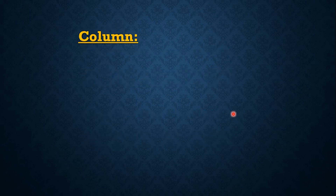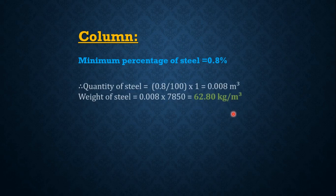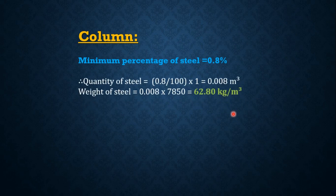Now let's see how much quantity of steel is required in a column. The minimum percentage of steel required in a column is 0.8%. So, the quantity of steel equals 0.8 divided by 100 multiplied by 1, which equals 0.008 meter cube. The weight of the steel equals 0.008 multiplied by 7850, which is equal to 62.80 kg per meter cube.